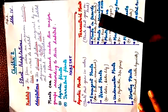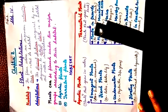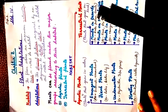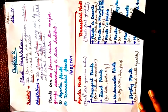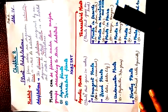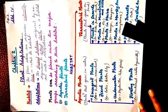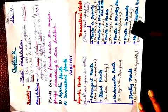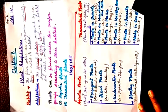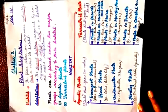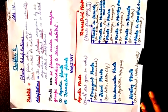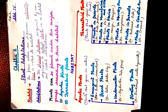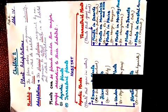Terrestrial plants are of six types: plants in desert, plants on mountains and hills, plants in plain, plants in marshy area, plants in forest, and plants in coastal area. Today I will discuss the aquatic plants.